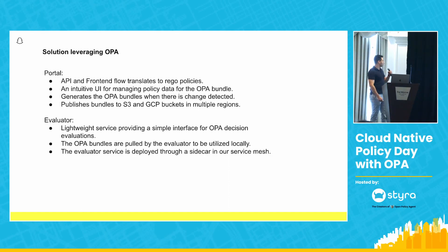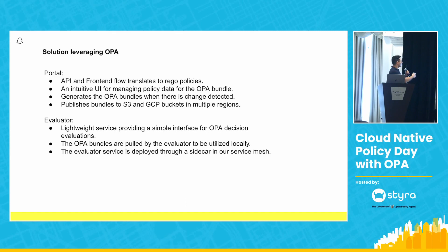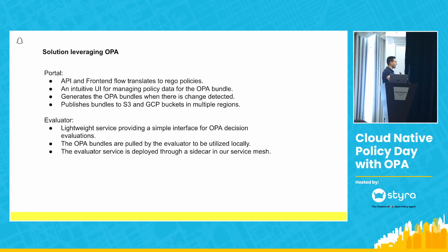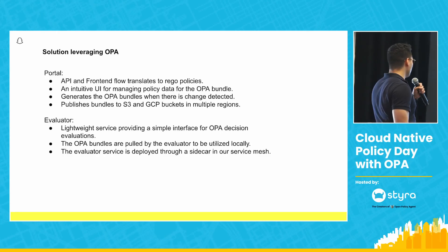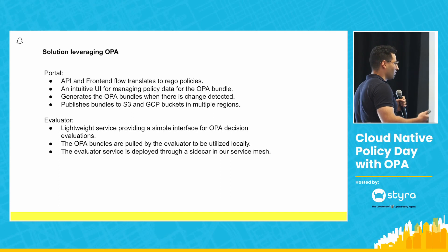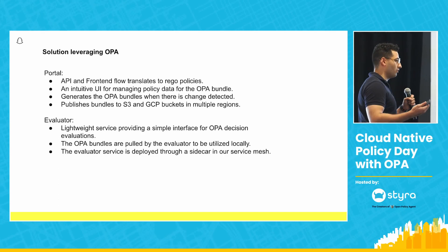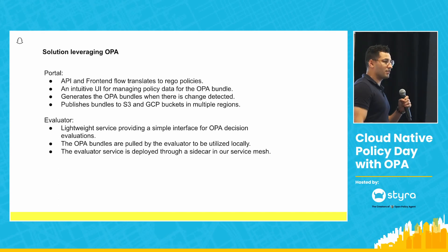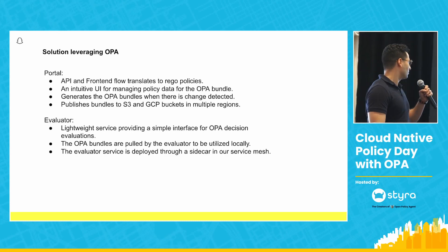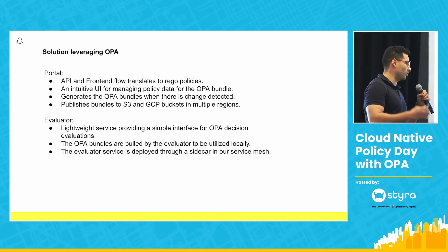I'll talk about the two main components of our solution, the first being Portal. Portal is an API that also provides a front-end flow that translates to Rego policies. It's an intuitive UI for managing policy data that goes into OPA bundles. Whenever there's a change in the policy data, it generates new bundles and publishes them to S3 buckets and GCP buckets in multiple availability zones.